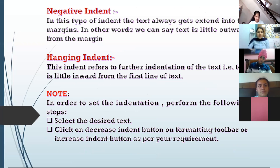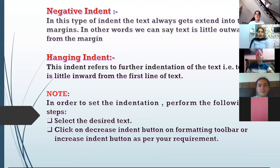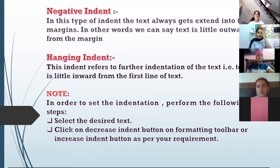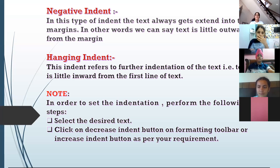Positive indent: if you keep the text inside towards the right, you keep the text inside the margins — that is the positive indent. Negative indent: if the text extends beyond the margins, going outward — that is the negative indent. Hanging indent: the first line is slightly to the right side and the rest of the text is on the same edge on the left side — that is the hanging indent.